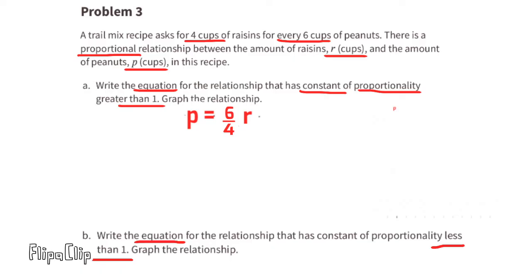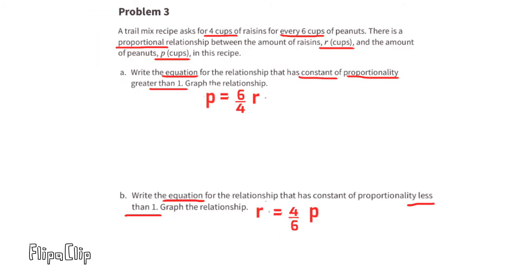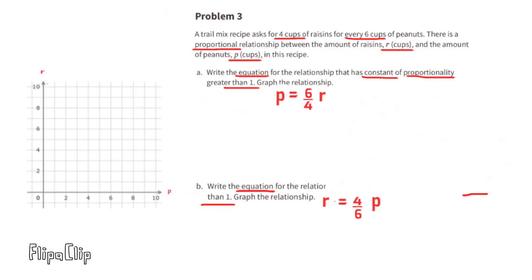The equation R = (4/6)P has a constant of proportionality less than one. In this graph, the horizontal axis represents peanuts and the vertical axis represents raisins. For every six cups of peanuts, there are four cups of raisins.